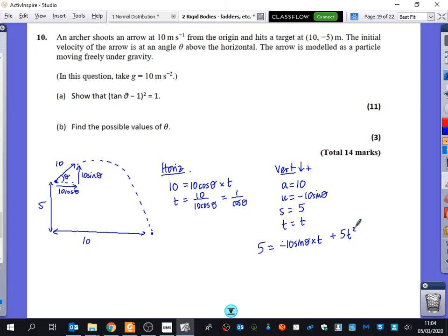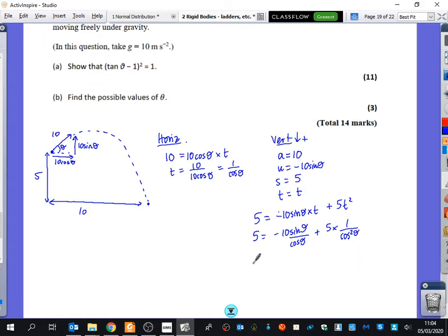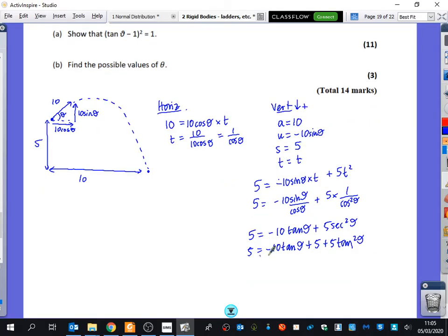And we need to try and show that that thing is true. So I'm now going to substitute 1 over cos theta in here. So I get minus 5 sine theta over cos theta plus 5 times 1 over cos squared theta. So this is 5 equals minus 10 tan theta plus 5 sec squared theta. What is sec squared the same as? 1 plus tan squared. So I get 5 equals minus 10 tan theta plus 5 plus 5 tan squared theta.